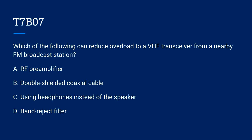T7B07. Which of the following can reduce overload to a VHF transceiver from an FM broadcast station? A. RF preamplifier. B. Double shielded coaxial cable. C. Using headphones instead of the speaker. Or D. A band reject filter. The correct answer is D. Band reject filter.